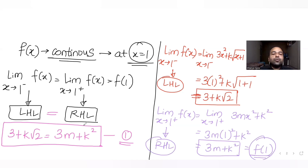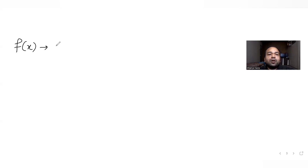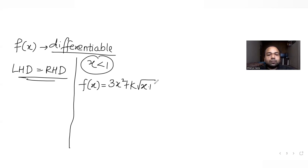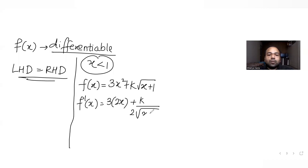One equation cannot solve two unknowns, so we need a second equation. Since the function is differentiable for all positive x, the left hand derivative must equal the right hand derivative at x equal to 1. For x less than 1, f of x equals 3x squared plus k times root of (x plus 1), so f dash of x equals 6x plus k divided by 2 root of (x plus 1).